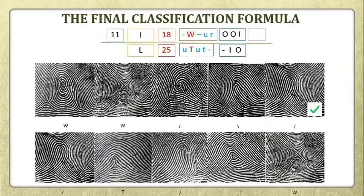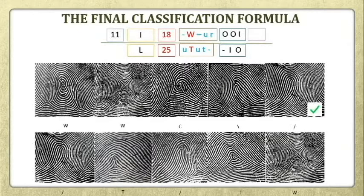When the right little finger is an arch and the left little finger is a whorl, the whorl on the left little finger will be used for final classification. If you ridge count a whorl found on the left little finger, you have to start from the right delta up to the core, and the final classification will be located at the denominator side of the classification formula.